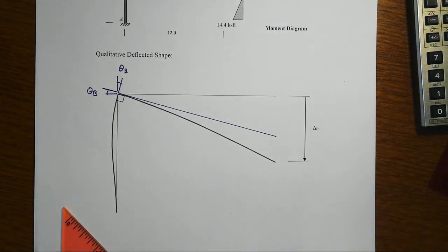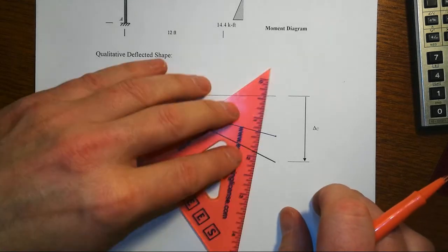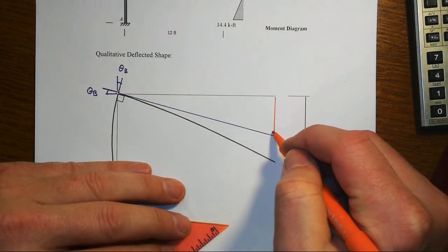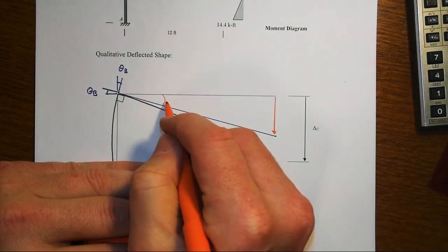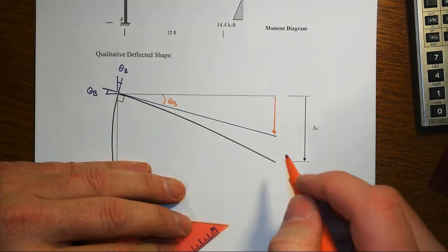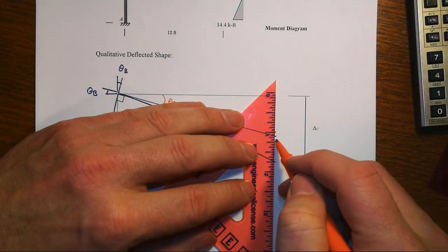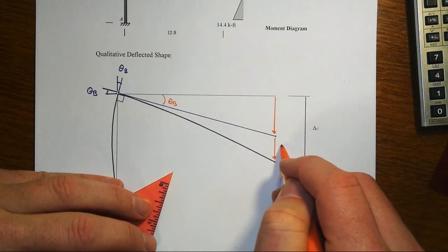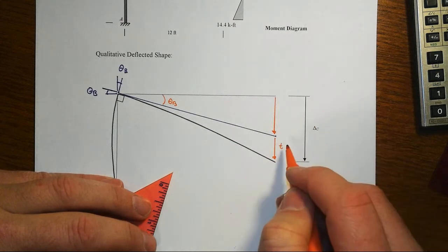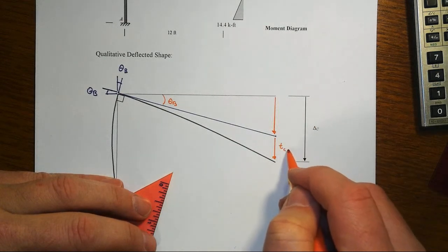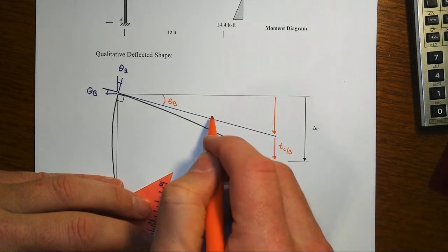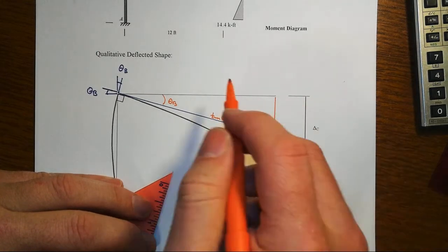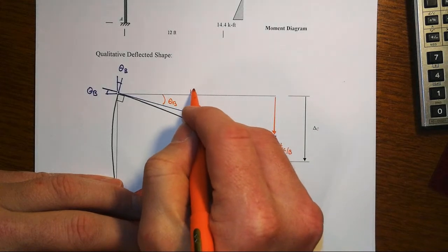then we find out that this displacement that's happening out here at C can be thought of as two pieces. It can be thought of as the piece that comes from the rotation that happens here at B, and it can be thought of as this piece that goes from that tangent down to the deflected shape, which is the very essence of the definition of a tangential deviation,